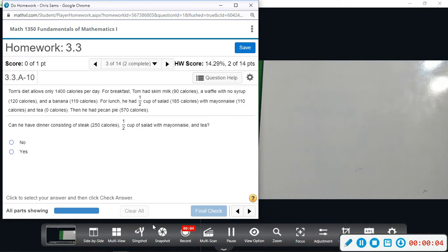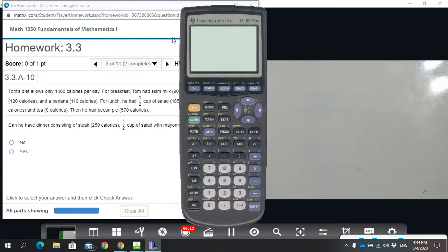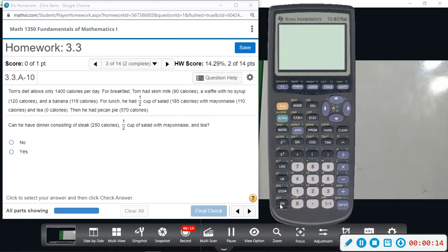Okay, problem three is a word application. It says Tom's diet allows 1,400 calories, so I'm going to let the calculator compute this. We're going to start out with 1,400 calories - one, four, zero, zero.